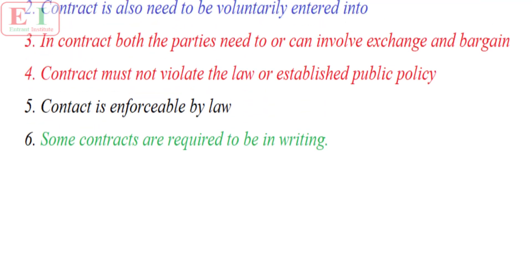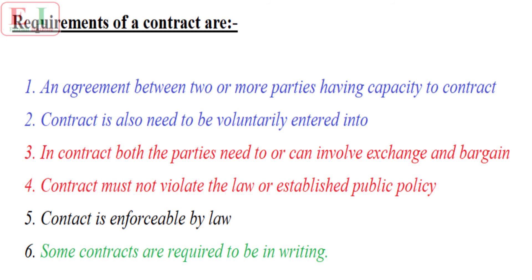The requirements are an agreement between two or more parties having capacity to contract. Contracts also need to be voluntarily entered into. In a contract, both parties need to involve exchange and bargain. Contracts must not violate the law or establish public policy. A contract is enforceable by law, and some contracts are required to be in writing.